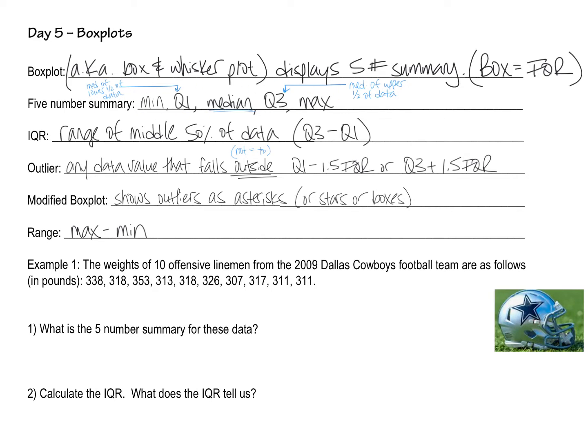The IQR represents the range of the middle 50% of the data. The formula for that is just Q3 minus Q1. That's where you make your box in your box and whisker plot. And we will construct one a little bit later.